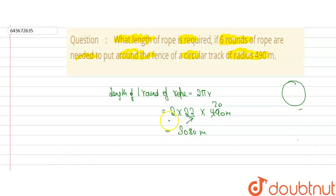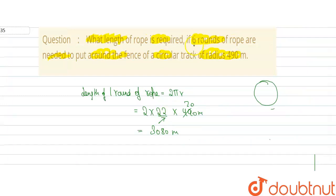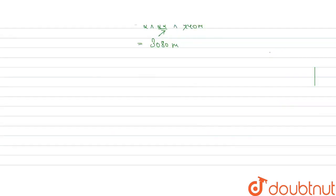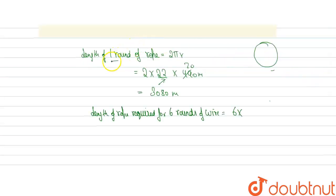Now we have to find out the length, as it is given to us that there are total 6 rounds of rope that are required. So we have to find the total length of rope. Therefore, length of rope required for 6 rounds of wire will be equal to 6 into length of 1 round of rope.